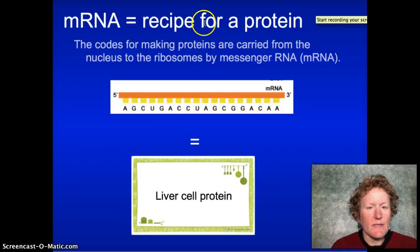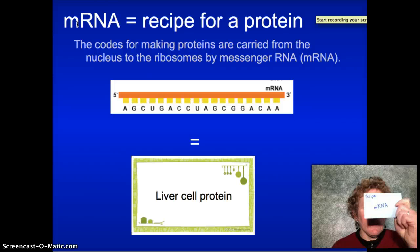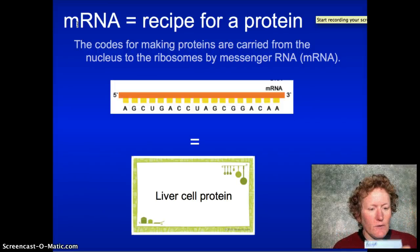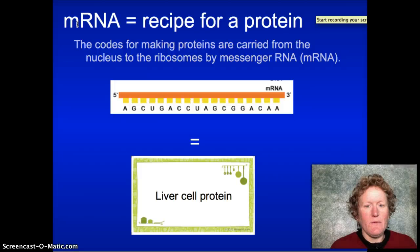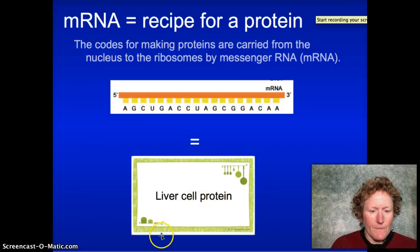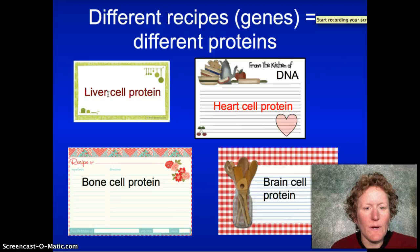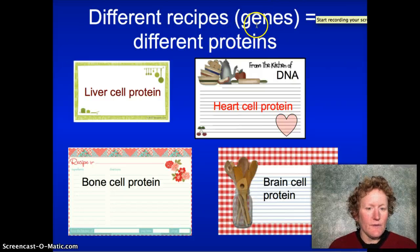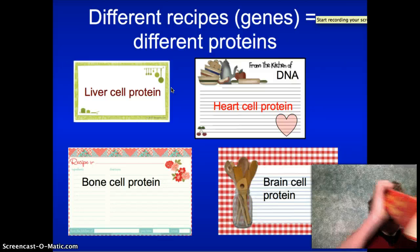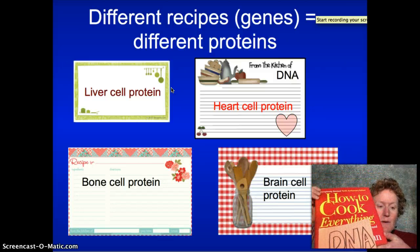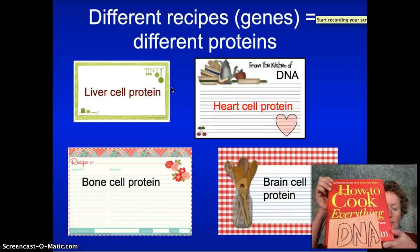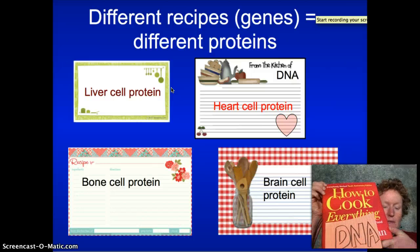mRNA is a recipe for a single protein. You transcribe a single gene into mRNA, just like you transcribe a single recipe — you wouldn't copy a whole bunch of recipes onto the same card. So the mRNA is a recipe for a single protein, a single gene. You copy it down into mRNA in the nucleus, then it goes out to the cytoplasm and gets turned into whatever proteins the cell needs. Different cells use different recipes — if your family has this cookbook, you might not use every single recipe in it.